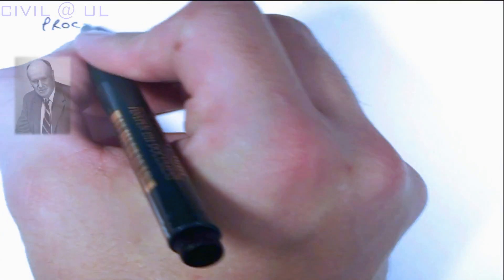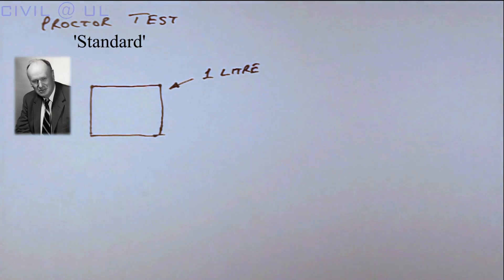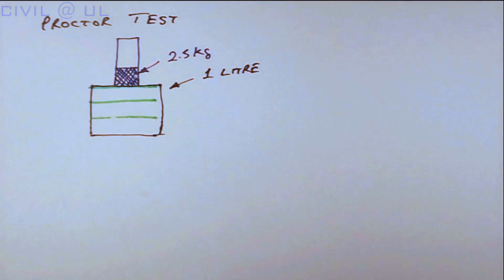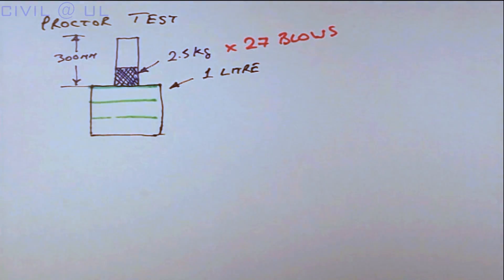The mechanics of performing the Proctor test involve filling a 1 litre mould in 3 equal layers, each layer being compacted by 27 blows of a 2.5 kg rammer which falls to a height of 300 mm.